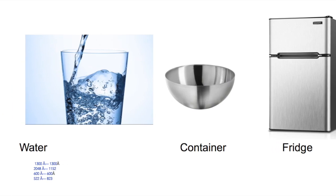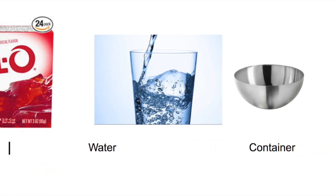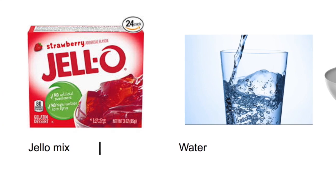To make Jell-O, you will need Jell-O mix, one cup of cold water, and one cup of boiled water, a container to put your Jell-O in, and a fridge.